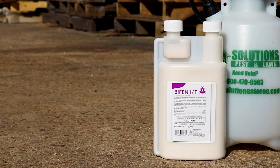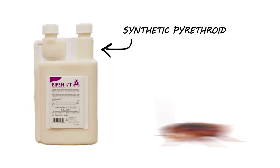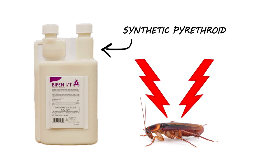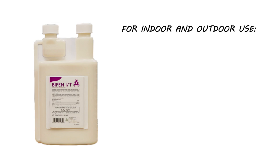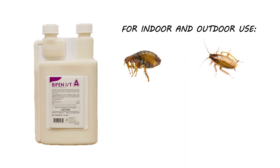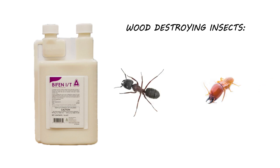Bifent IT is a 7.9% Bifenthrin Suspended Concentrate Insecticide. This product is a synthetic pyrethroid that works by interfering with the insect's nervous system. Bifenthrin controls many different species of insects, but we typically recommend it primarily for indoor and outdoor use to control fleas, cockroaches, spiders, mosquitoes, and even wood-destroying insects like carpenter ants and termites.